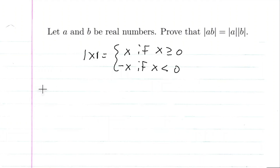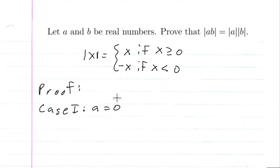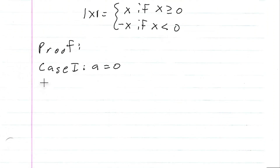This proof is going to be broken up into six cases. Case one is if a is zero, and it doesn't matter what b is. We have the absolute value of a times b, which is equal to the absolute value of zero times b, which is equal to the absolute value of zero, which is zero.